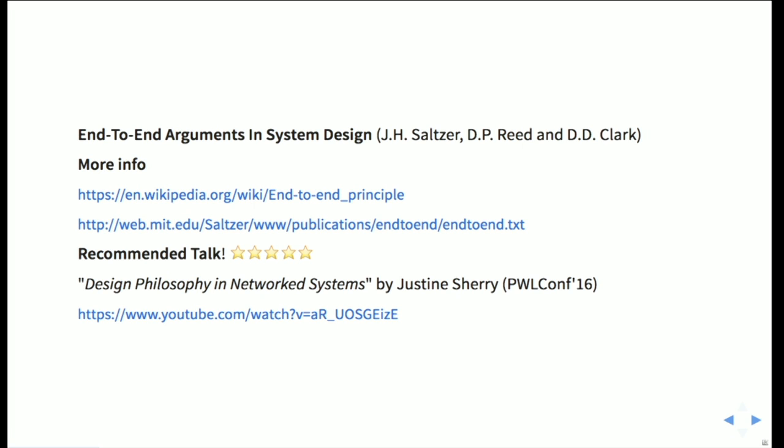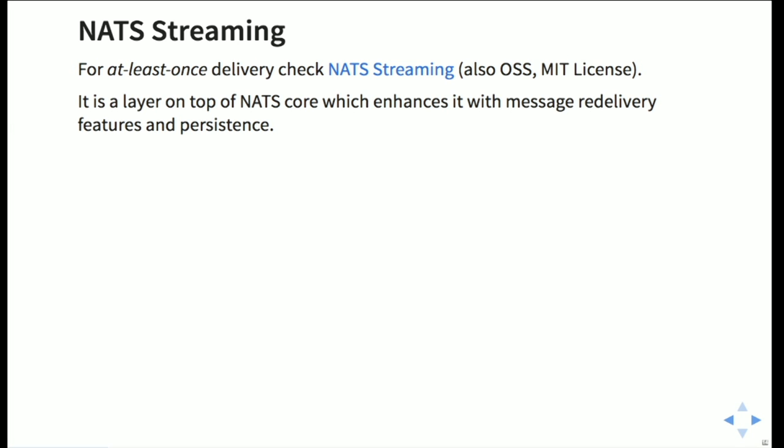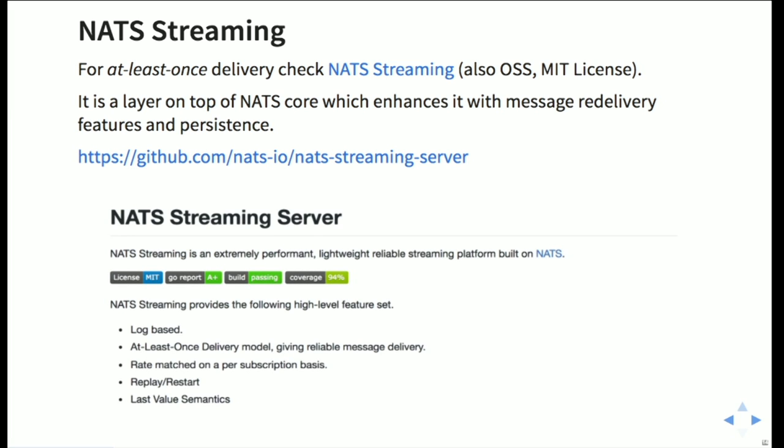There's a really good talk from Justin Sheree from the Papers We Love conference that I highly recommend — a must-watch. The NATS project covers at-least-once delivery by implementing another project on top of NATS, also open source under the MIT license, named NATS Streaming. It's a layer on top of NATS that enhances it with message redelivery features and persistence of messages, available under the NATS organization as the NATS Streaming Server, and it's increasingly popular these days.